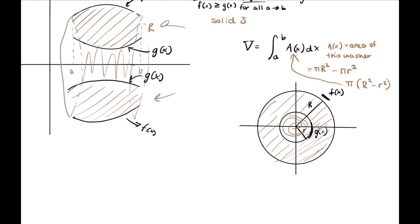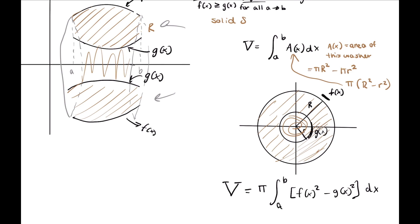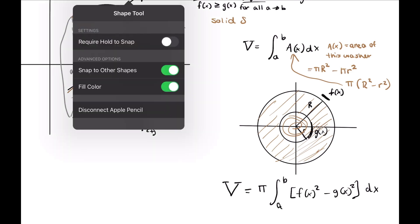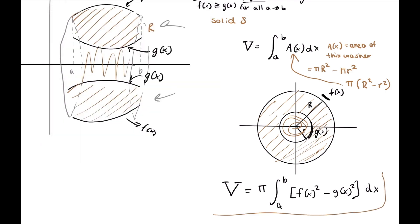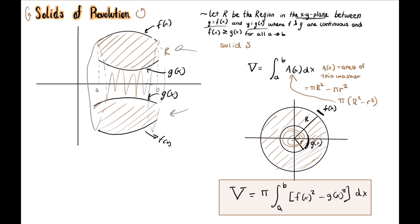Plugging that into our equation, the volume equals pi times the integral from a to b of f of x squared minus g of x squared dx. The outside function is f of x and the inside is g of x. That is the washer method. This is a good formula to keep in mind, but it's also quite simple to derive.